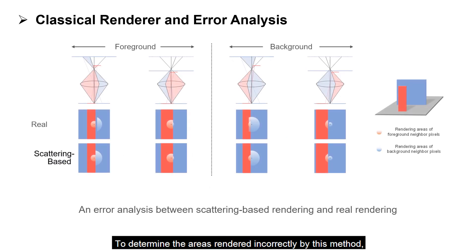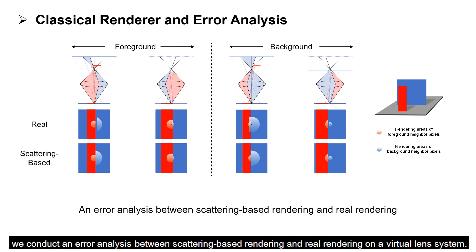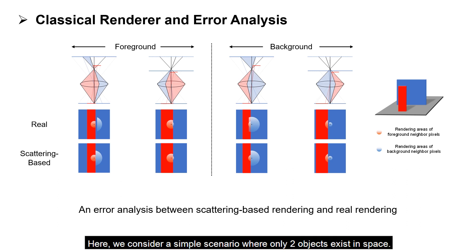To determine the areas rendered incorrectly by this method, we conduct an error analysis between scattering-based rendering and real rendering on a virtual lens system. Here, we consider a simple scenario where only two objects exist in space.